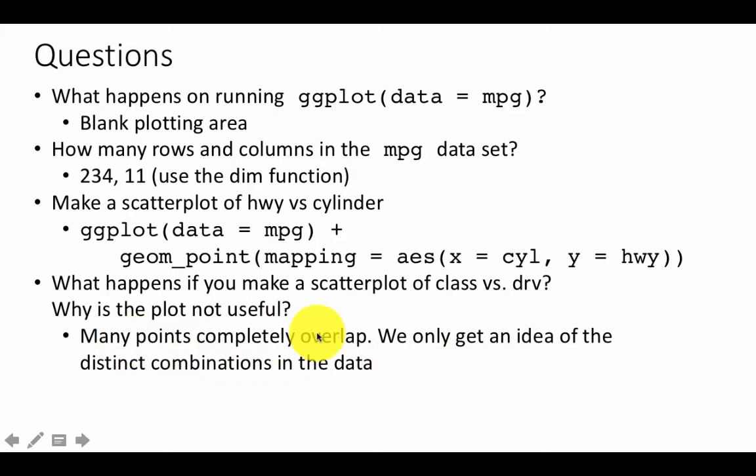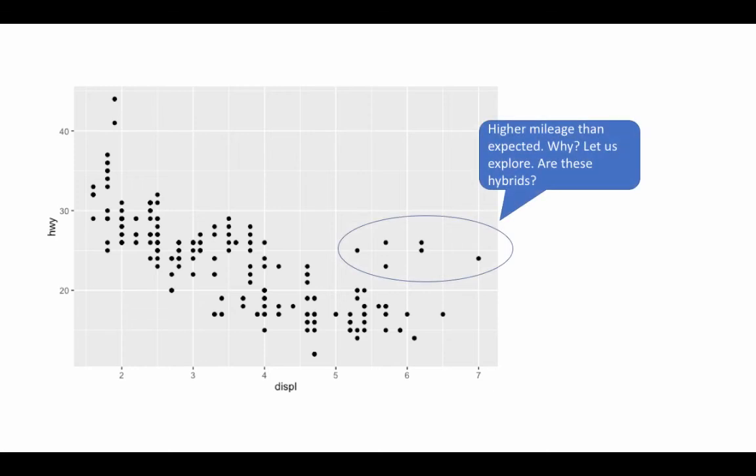What really happens is that many points, they completely overlap, right? Because class is a categorical variable. Drive is a categorical variable. So there's only a certain number of combinations. So even though we have 234 rows of data in our data frame, there are only some 20 or so distinct such combinations. So you will have very few points. So the point is, a number of points, they just overlap. And you get very few points plotted in this. So it's not a very useful plot.